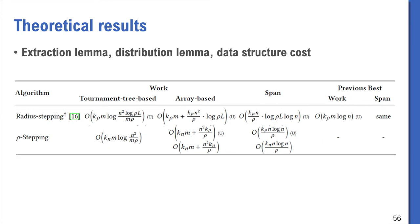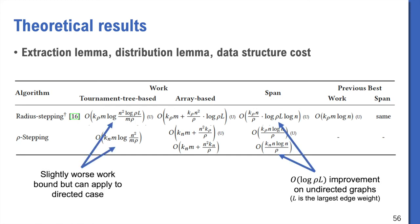If we compare our Rho-stepping with Radius-stepping, one of the existing theoretically efficient algorithms. The span bound on the undirected graph is improved, and the work is slightly worse, but it applies to directed graphs.